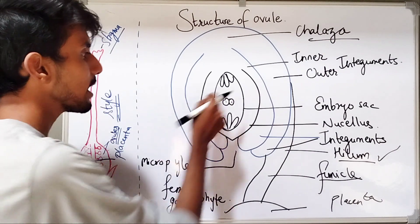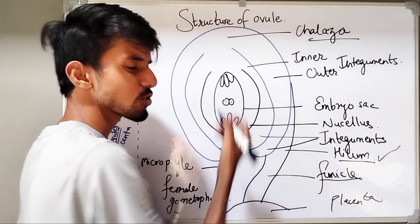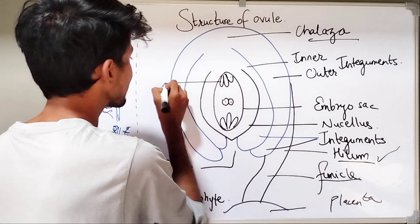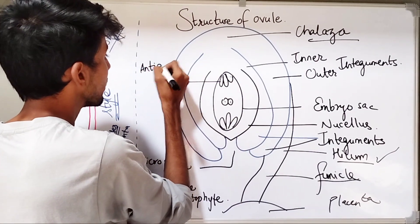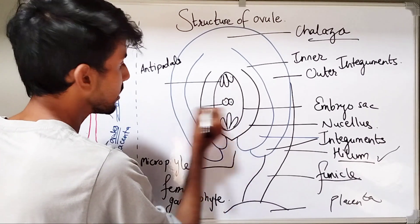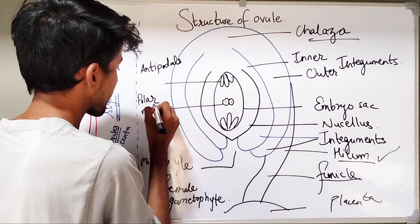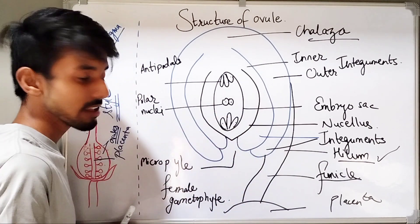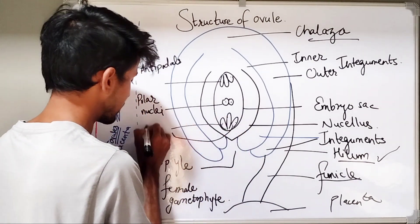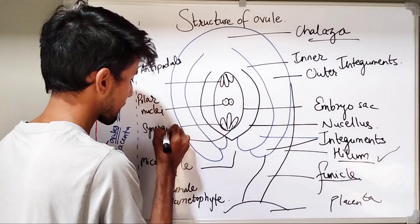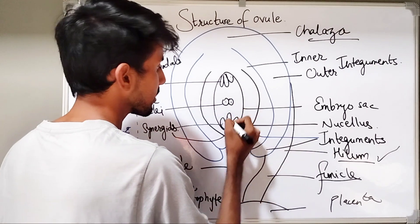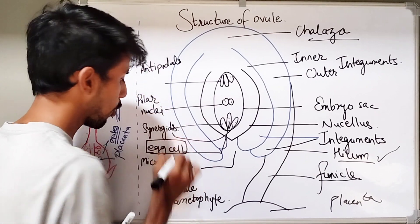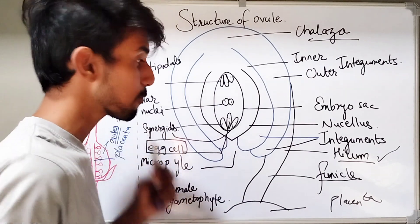Let us have a look at the embryo sac. We will briefly talk about what structures are in the embryo sac. Here, at the chalazal end, you have three cells which are called as antipodals. In between, you have polar nuclei. And near the micropilar end, you have three cells again — out of these three cells, two are the synergids, and one is the main egg cell, which is the ovum that is going to fertilize with the male gamete and form the embryo.